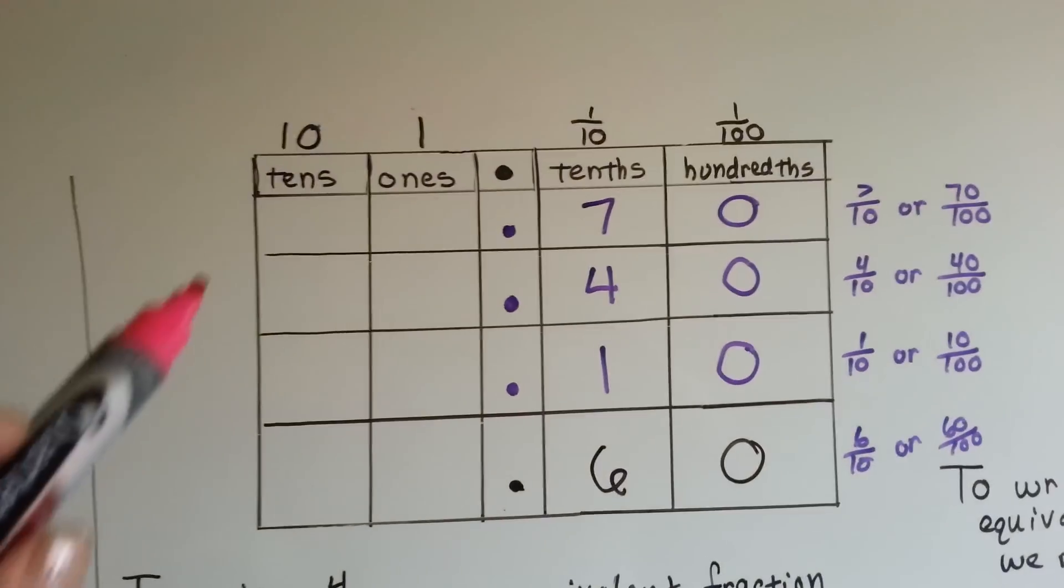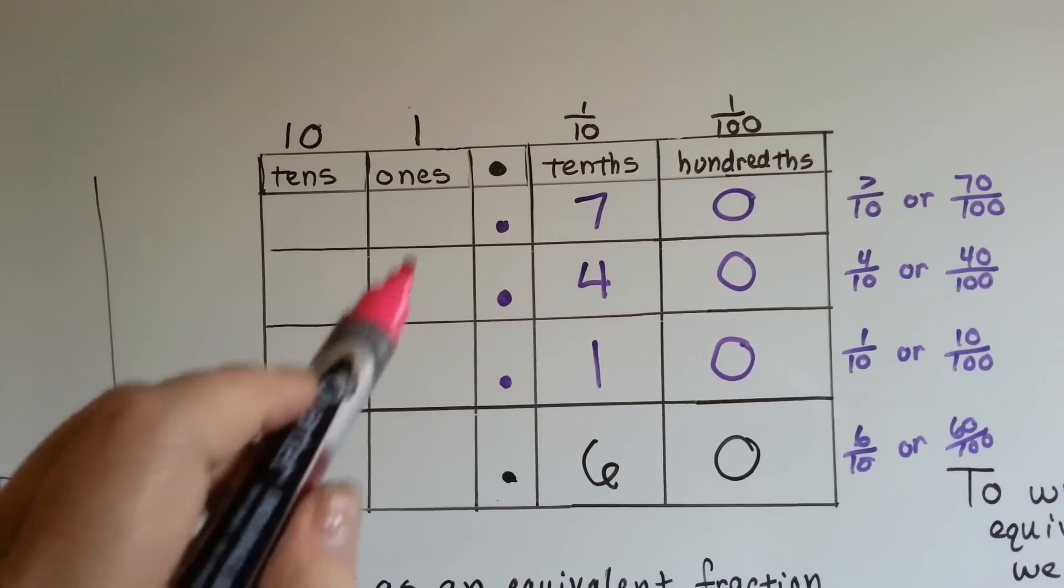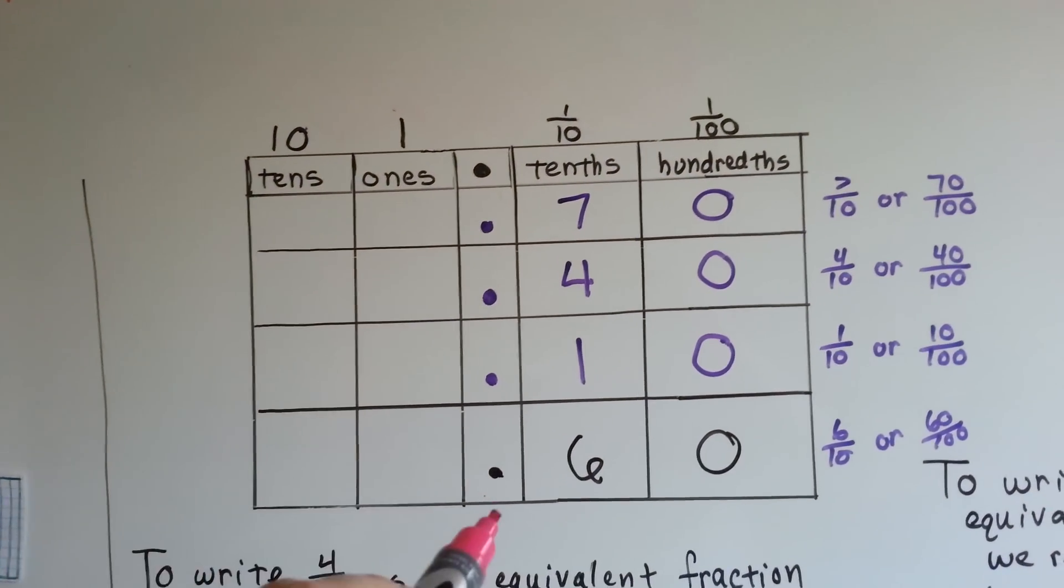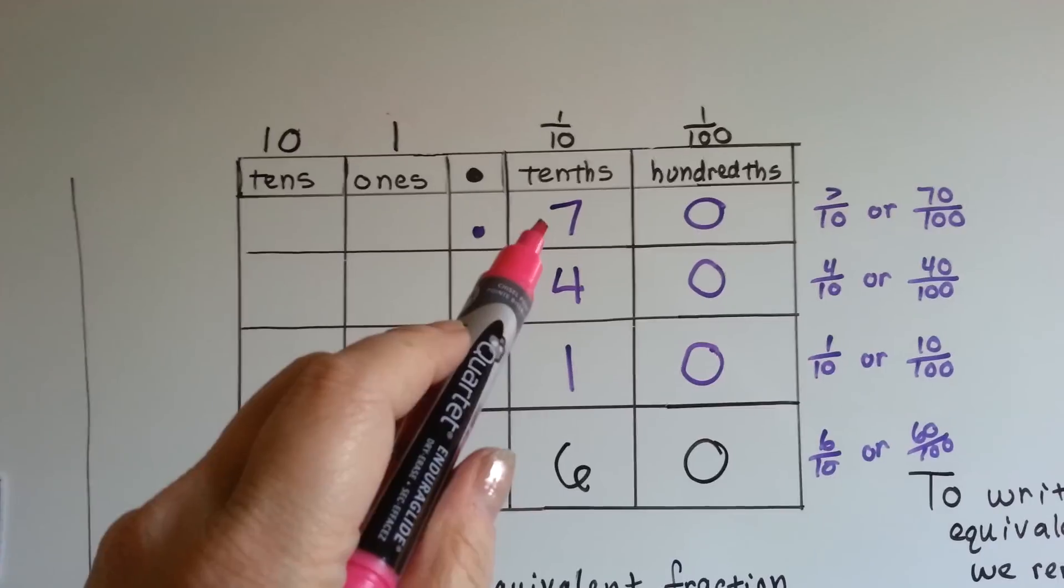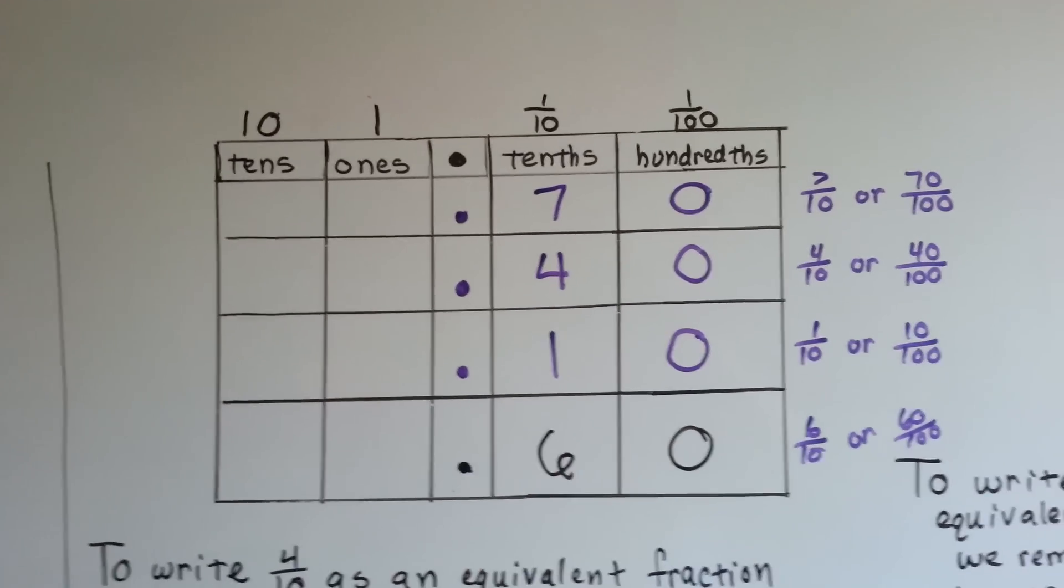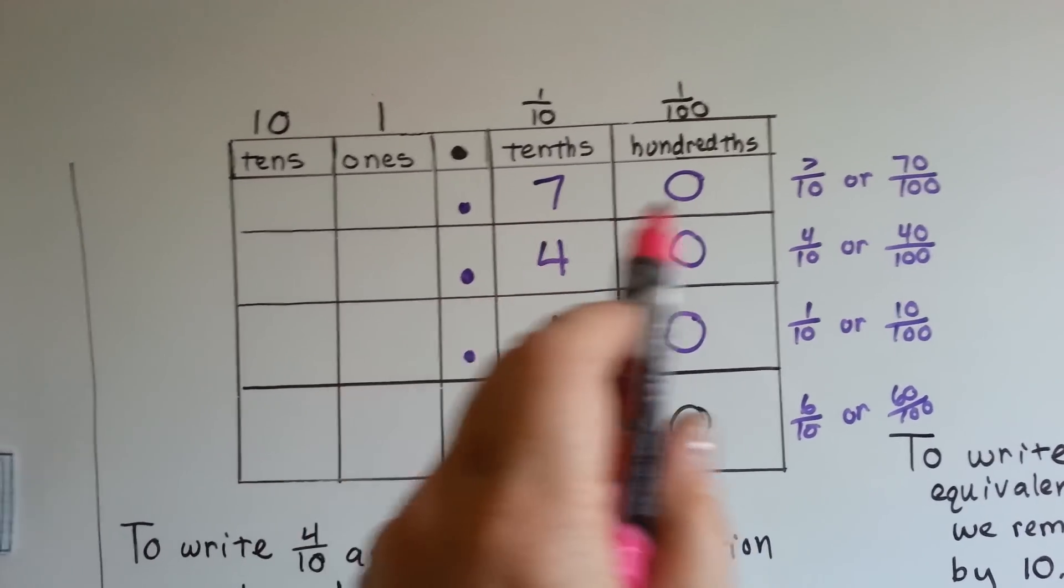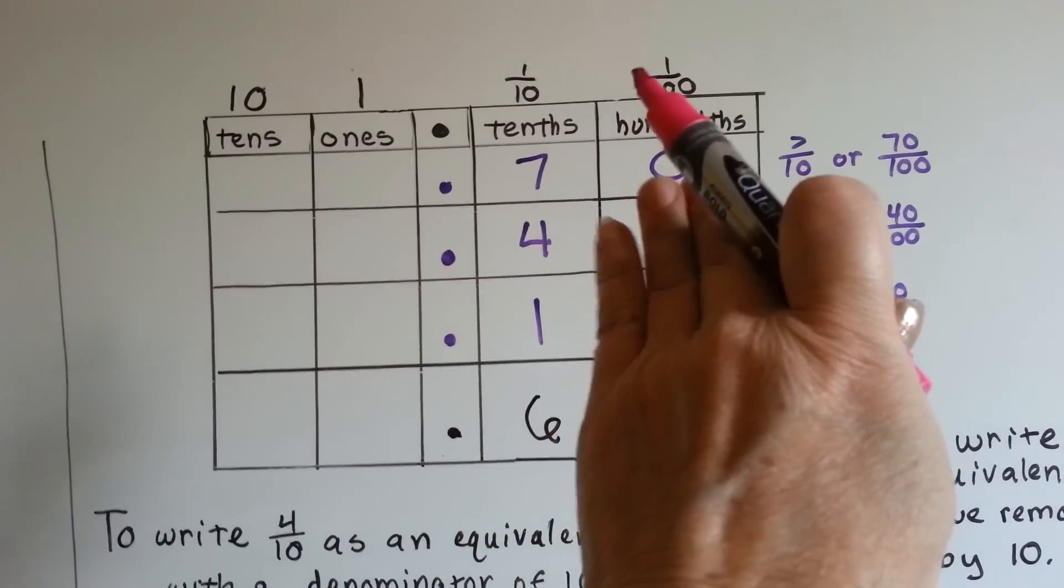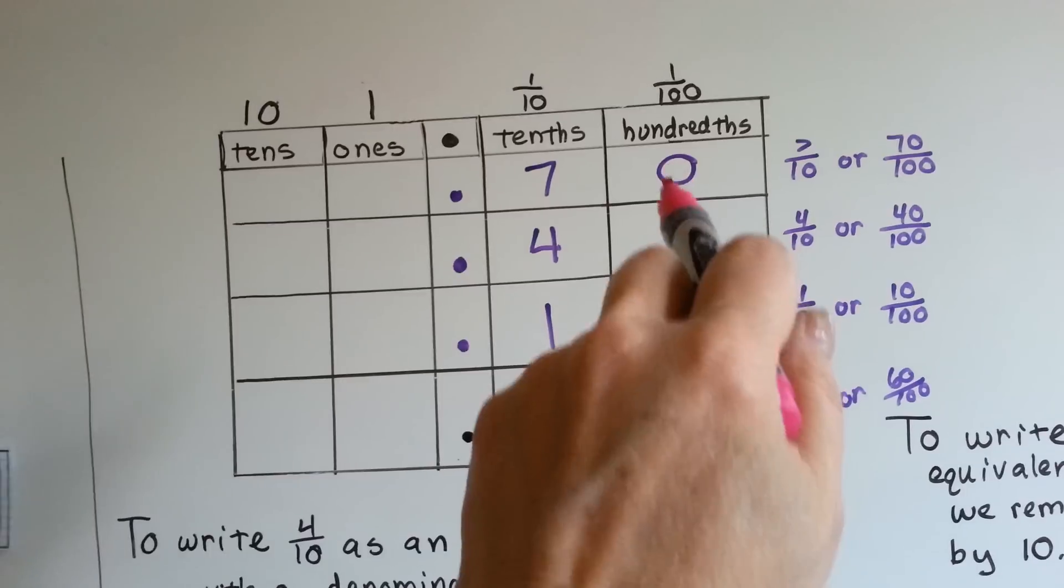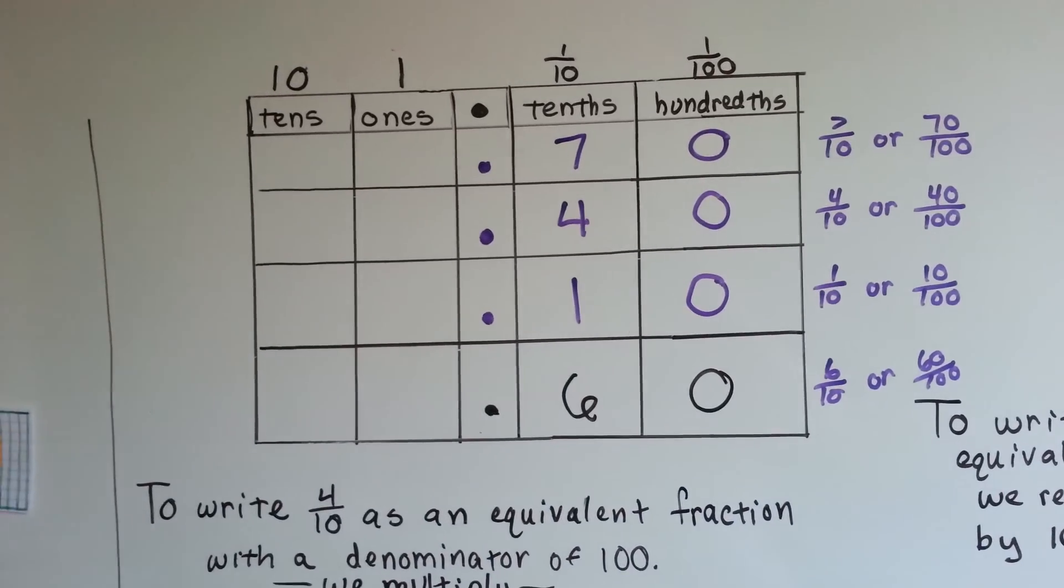Alright, so now let's look at this chart. Here's the tens place value, the ones place value, all our decimal points, the tenths place value, and the hundredths place value. We have seventy hundredths, but we could also say it's just seven tenths, right? Because there's a zero there.